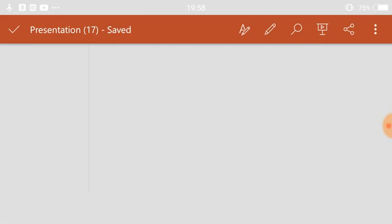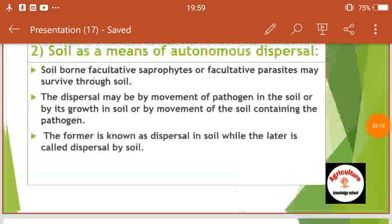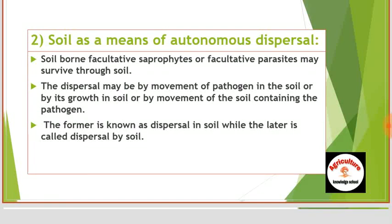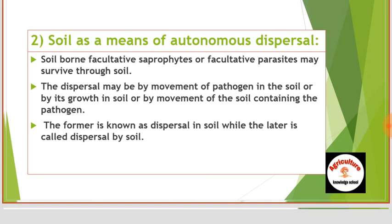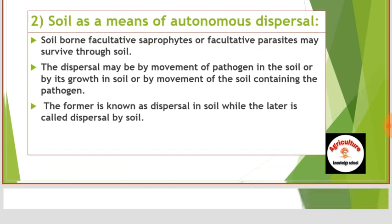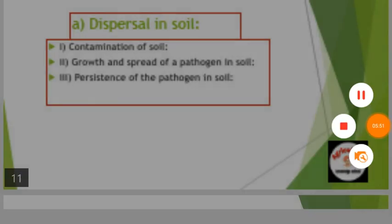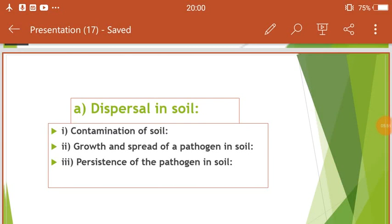Soil is a means of autonomous dispersal. Soil-borne facultative saprophytes or facultative parasites may survive through soil. The dispersal may be by movement of the pathogen in the soil, by its growth in soil, or by movement of soil containing the pathogen. The former is known as dispersal in soil, while the latter is called dispersal by soil. Dispersal in soil includes: contamination of soil, growth and spread of the pathogen in soil, and persistence of the pathogen in soil.